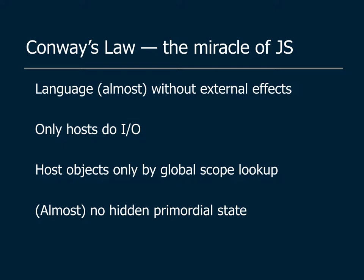The organizational split led to JavaScript being protected from having too many browser concepts folded into the language. In particular, the JavaScript language essentially has no I/O — only the host provides I/O. JavaScript code gets to host objects initially only by global scope lookup. So if you can intercept the global scope lookup, you can virtualize the entirety of the host and therefore control the ability of any of that code to cause effects on the world outside of itself.